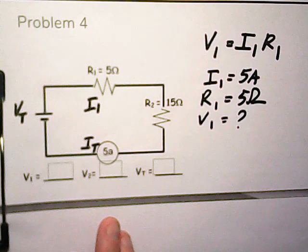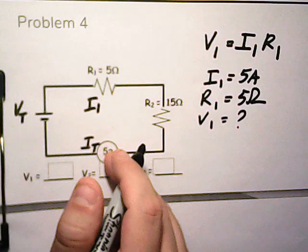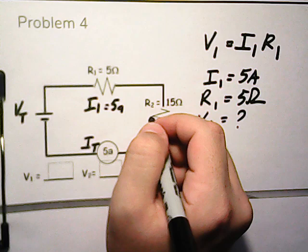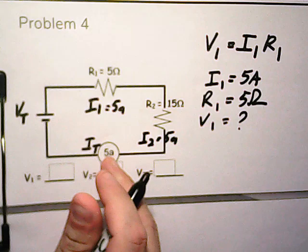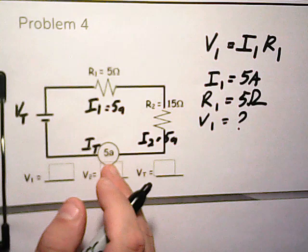So what we're going to have to do is use V equals IR to solve. They give us the total current here as five amps. So that means each spot, I1 and I2, are also going to be five amps because the current total is going to be the same at each individual place.